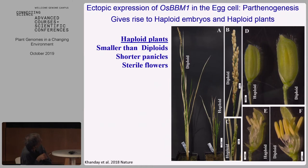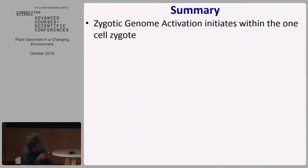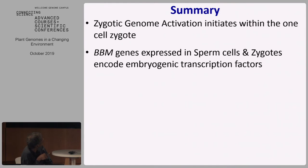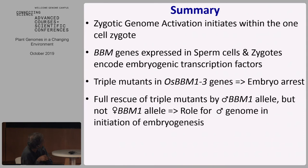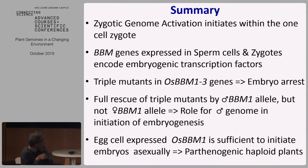If you allow endosperm to be fertilized, you can get viable seeds that are now haploid, because the egg cell is haploid and the embryo will also be haploid. The plant you get is also haploid and will be sterile because it can't undergo meiosis properly. Summary of part one: zygotic genome activation occurs at the one-cell zygote stage in plants. BBM genes expressed in sperm cells and zygotes encode embryogenic transcription factors; triple mutants are embryo-lethal. Full rescue is only by the male allele, meaning the male genome has a critical role in initiation of embryogenesis. If you circumvent that male role by expression in the female, you get parthenogenic haploid plants.